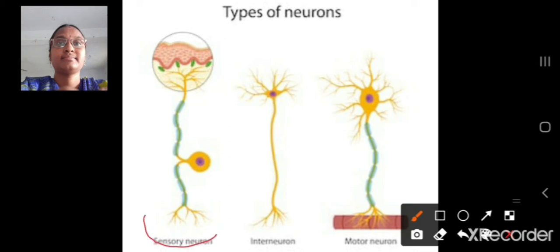In reflex arc, the sensory nerves carry messages from sense organs like eyes, ears, nose, tongue, and skin to brain or spinal cord. Mostly in reflex arc, the information is carried to spinal cord. These are the sensory nerves. These are motor nerves. These nerves carry messages from brain or spinal cord to the muscles.